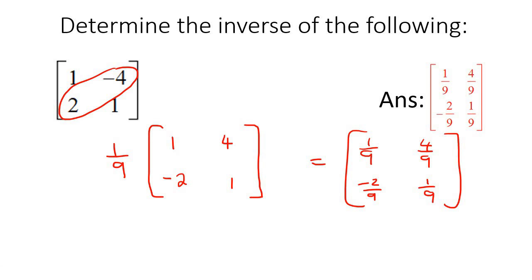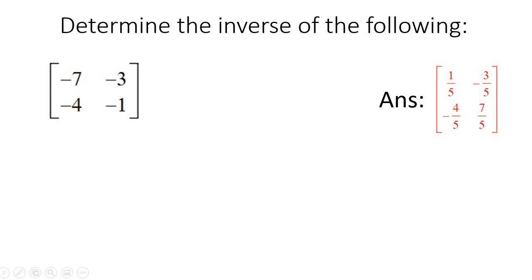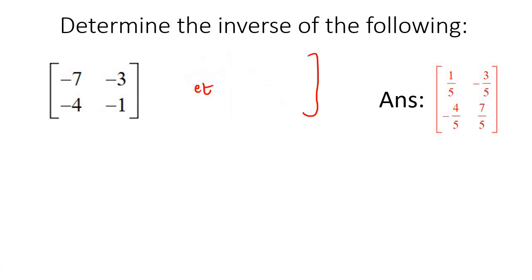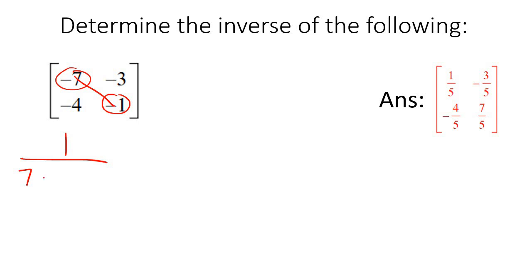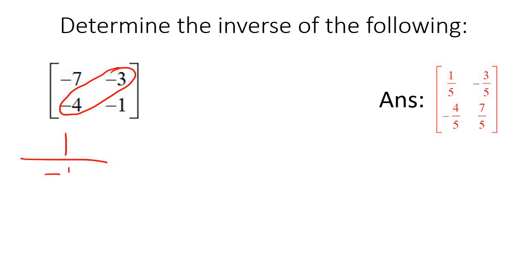Here's another example. The formula is: 1 over the determinant, then do the switching and sign-changing. The determinant: these two multiplied together — negative 7 times negative 1 is 7. Then subtract these two multiplied together — negative 3 times negative 4 is positive 12. So the determinant is 7 minus 12, which is negative 5. We've worked out the determinant.